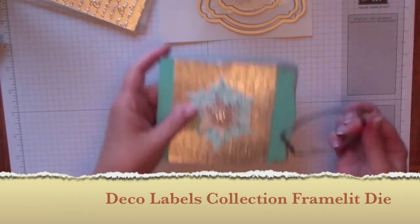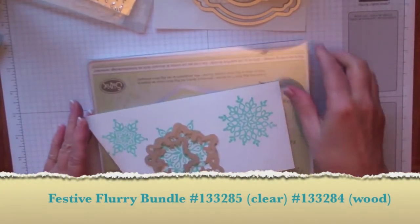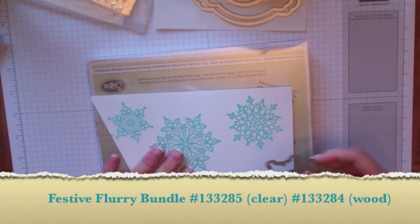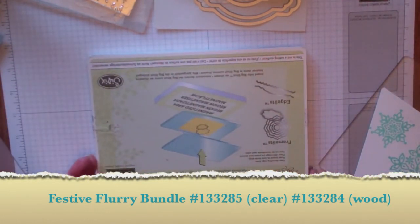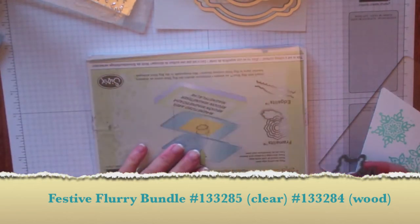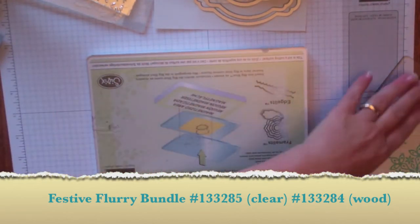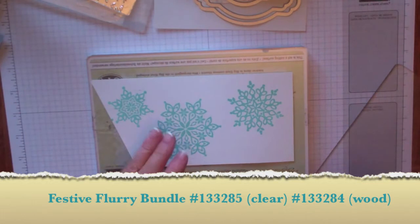For the snowflakes, I wanted to show you a little trick. I went ahead and stamped these three snowflakes, and they have matching framelits. Now, this is the metallic platform. I must with these framelits. It's just so easy. You're going to put your clear plate down. Don't forget to do that. Put your stamped piece on top.